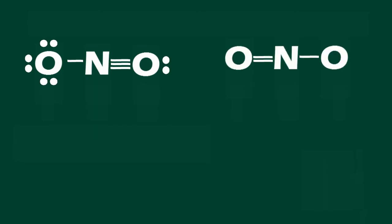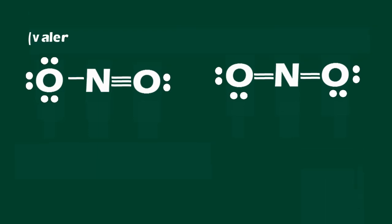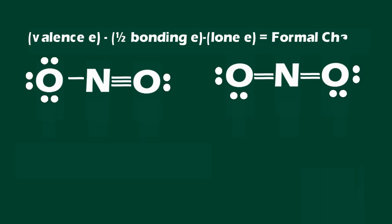The formula for formal charge is the number of valence electrons minus one half of the bonding electrons minus the lone electrons. Let's calculate the formal charge of the first structure.